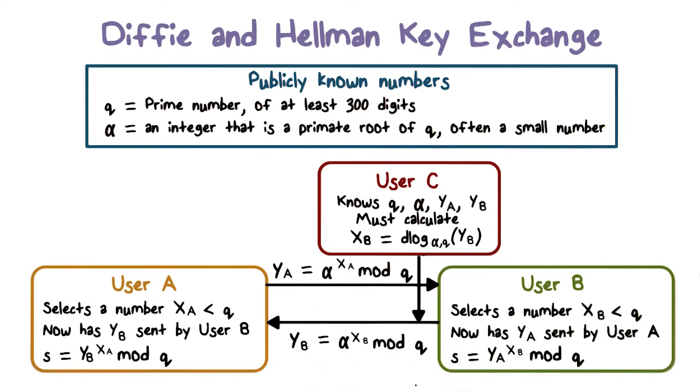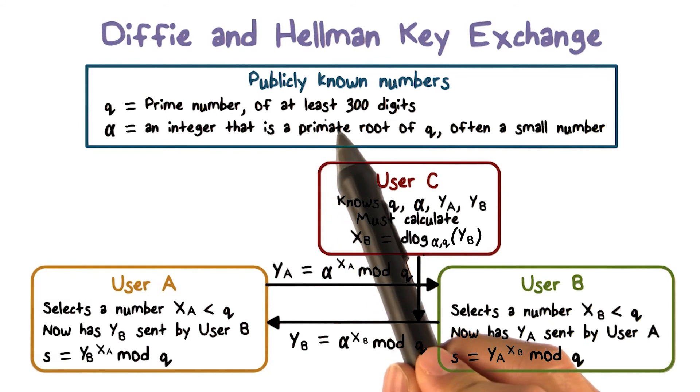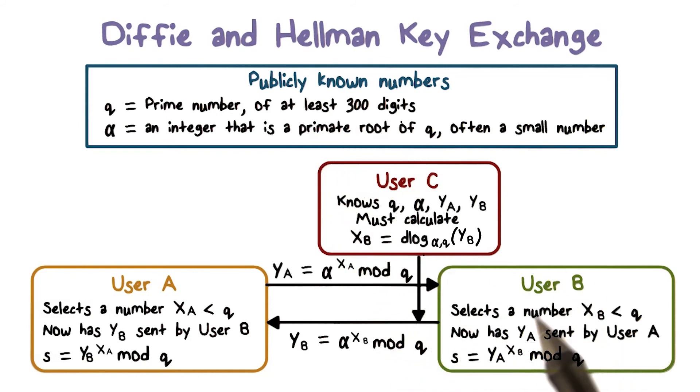The security of the Diffie-Hellman key exchange algorithm lies in the fact that, while it's relatively easy to calculate the exponents modular a prime, it is very difficult to compute the discrete logarithm. For large primes, such as q, at least 300 digits long, this task is considered infeasible.